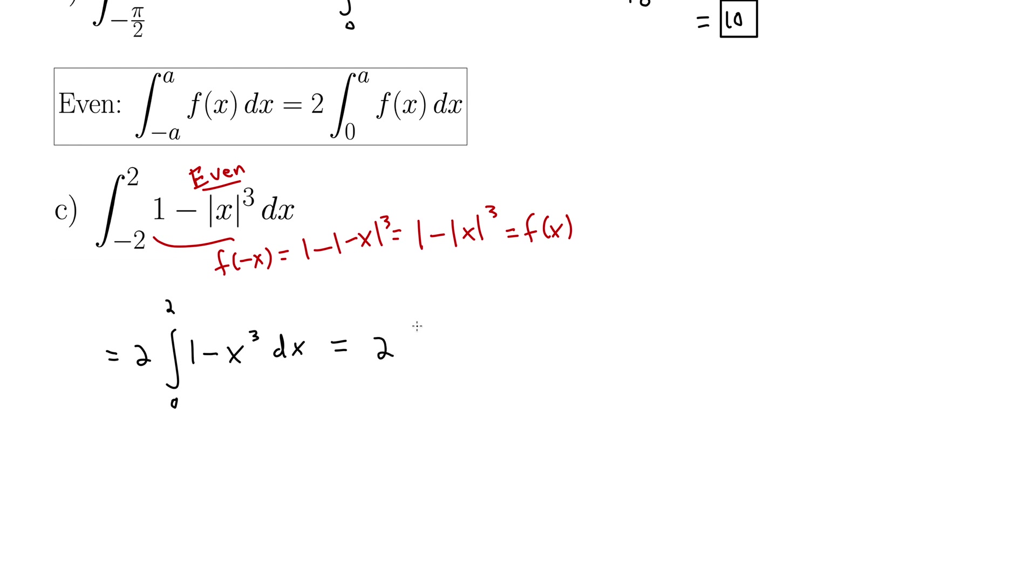Let's do the integral. This is two times, the integral of one is x minus x cubed becomes x to the fourth over four, and we're evaluating that from zero to two. I'll just leave this two out front. If we plug in two, we get two minus two to the fourth, 16 over four, minus plugging in zero just gives us zero. This is simply then two times two minus four is negative two, so negative four.